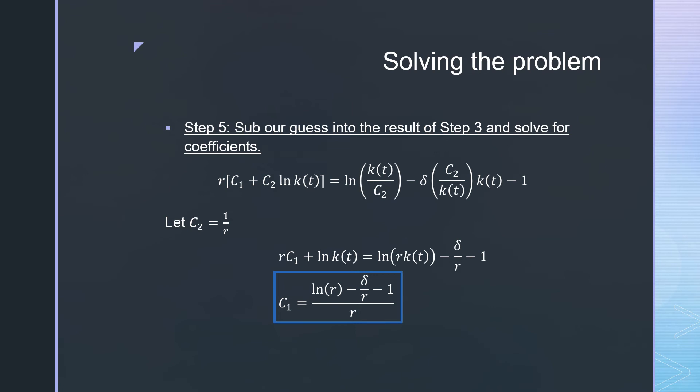We're going to cheekily pick 1/r just like last time, and we see that we're able to pull out an expression for c_1 that is different from our expression beforehand. This time we have a minus δ/r there when compared to our case where we didn't have depreciation.